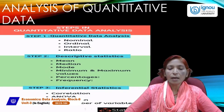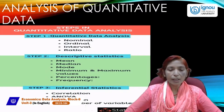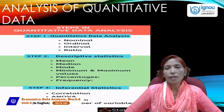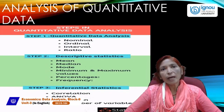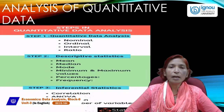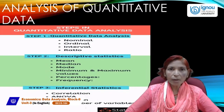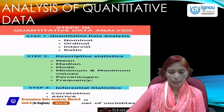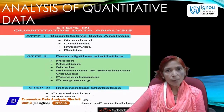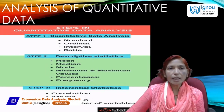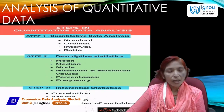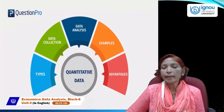Regarding the number of variables: if there is only one variable, that is called univariate series; if there are two variables, that is called bivariate; and if there are lots of variables, that is called multivariate. We will discuss univariate, bivariate, and multivariate in detail.